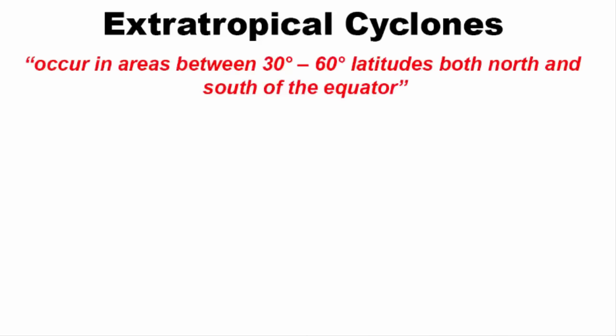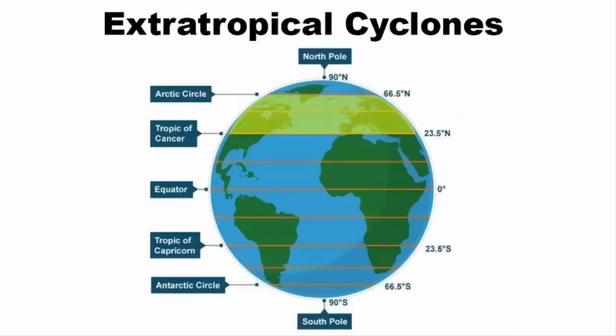It is a type of cyclone which occurs in areas between 30 degree and 60 degree latitude both north and south of the equator. In between Tropic of Cancer and Arctic Circle in the Northern Hemisphere. In the Southern Hemisphere, it is between Tropic of Capricorn and Antarctic Circle. This region is called the Mid Latitudes. That is why Extratropical Cyclones are sometimes called Mid Latitude Cyclones. And some part of the cyclone even touches the high latitudes.